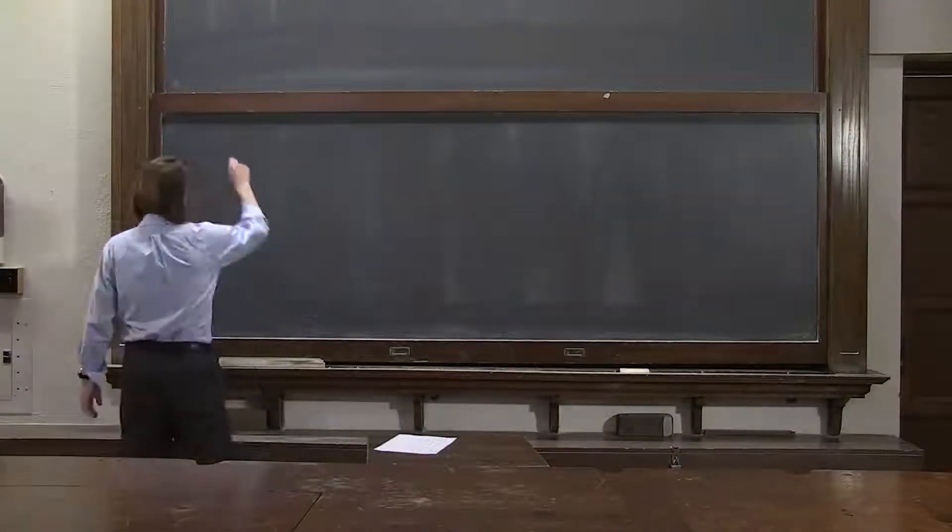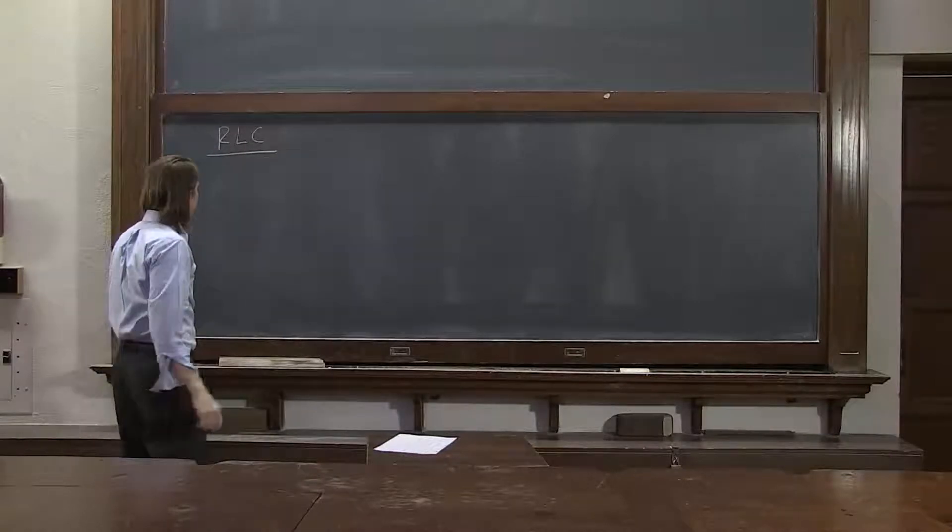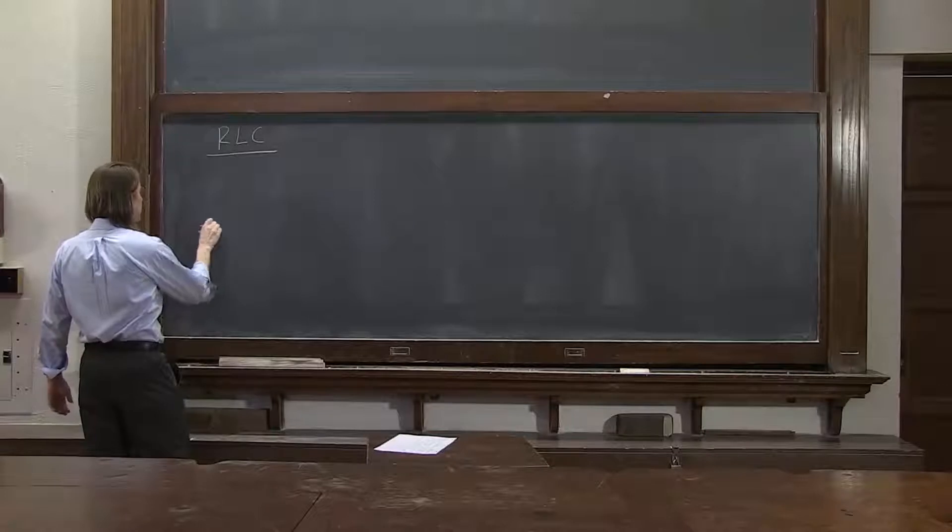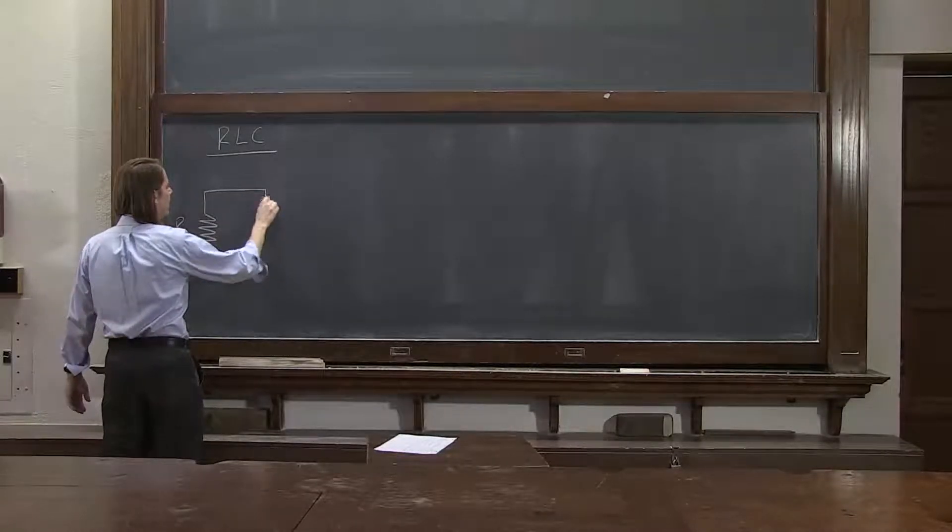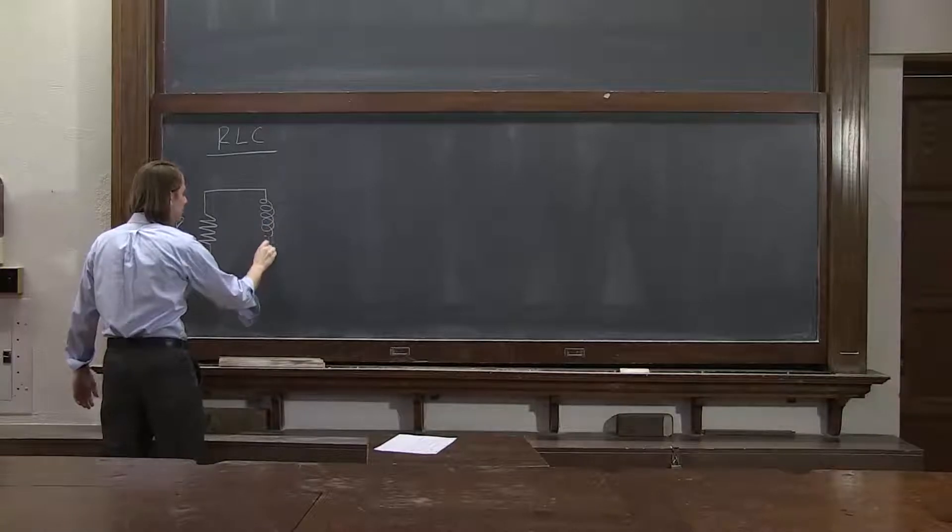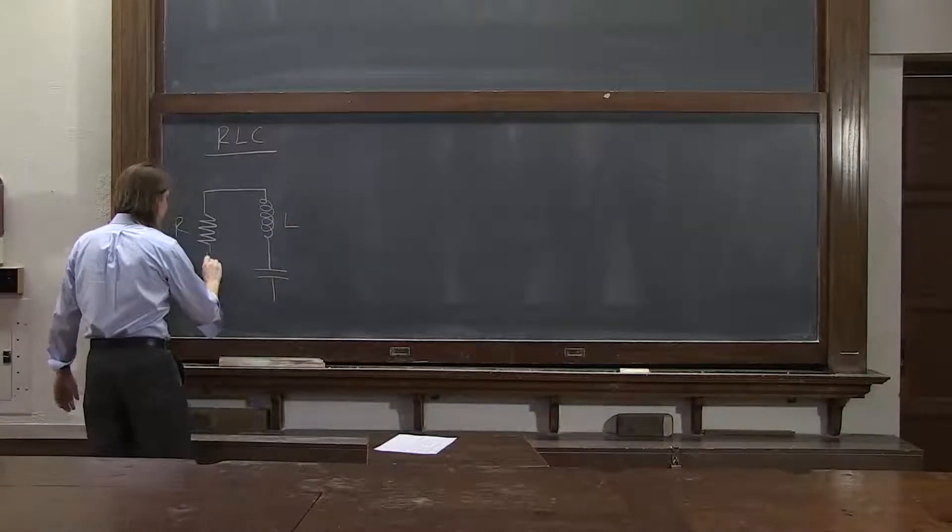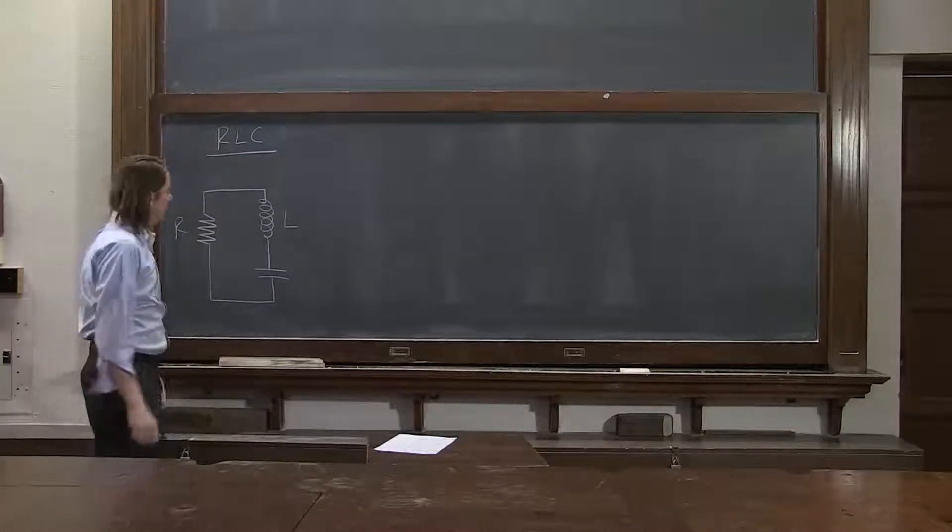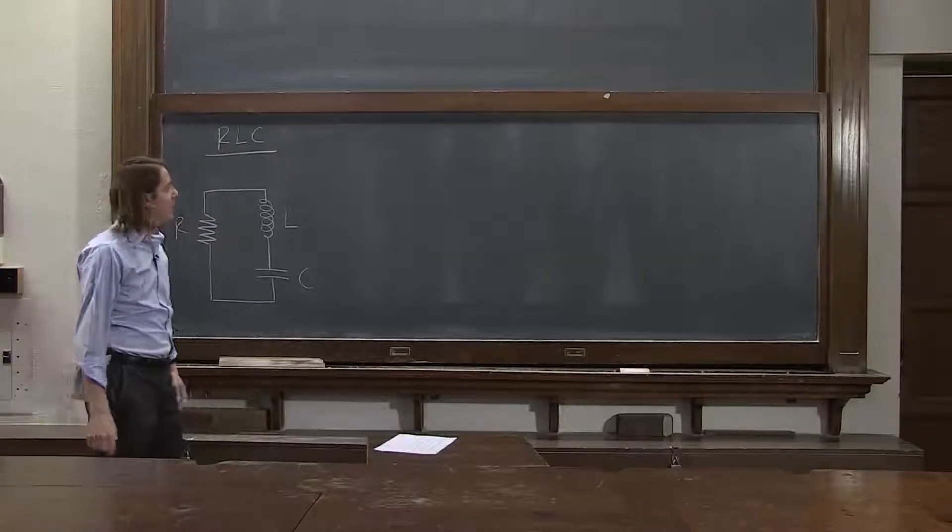Here's another circuit that will oscillate for us, the RLC circuit. You can probably guess what that is. It's got an R, and it's got an L, and it's got a C. A resistor, an inductor, and a capacitor in series.